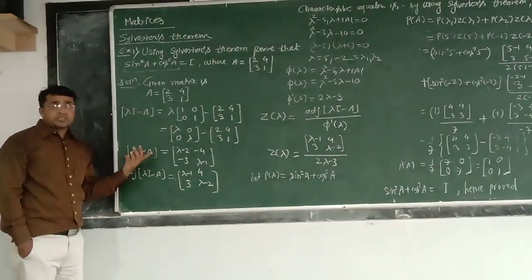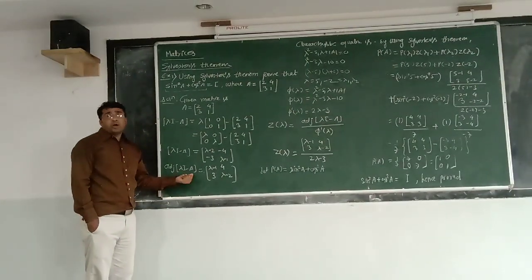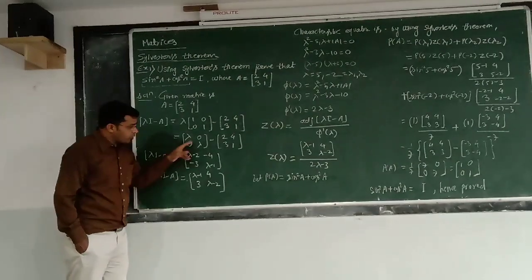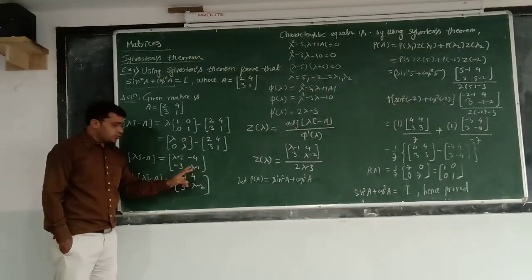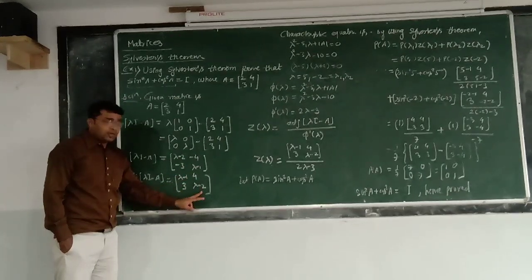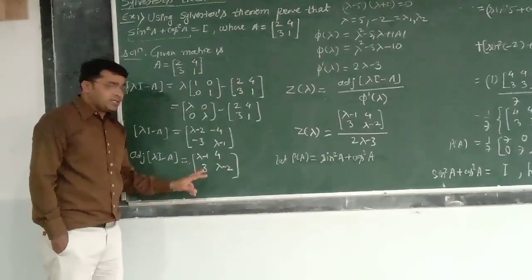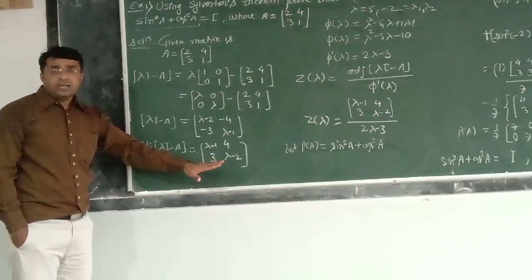But according to the statement of the Sylvester's, we have to find out adjoint of lambda I minus A. Now, it is easy to get the adjoint of lambda I minus A for the 2 by 2 matrix. I just interchange this two diagonal element, that is lambda minus 1, lambda minus 2, and I change the sign of this non-diagonal element, that will be 4 and 3. This will give you the adjoint of lambda I minus A for the 2 by 2 matrix.